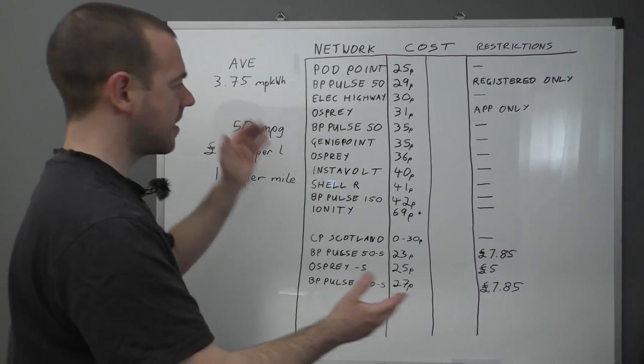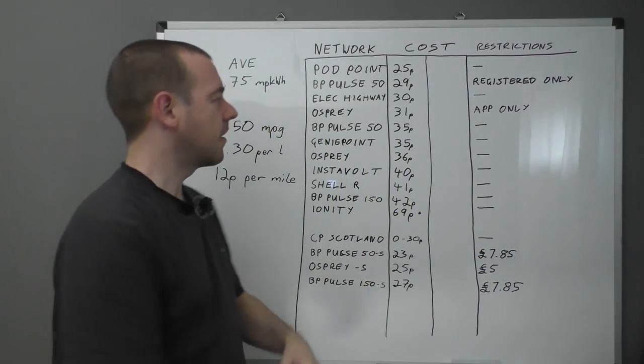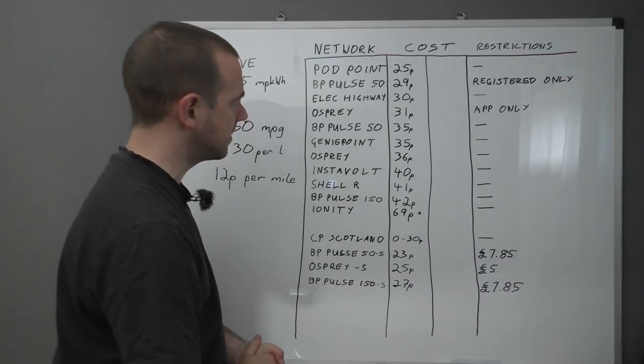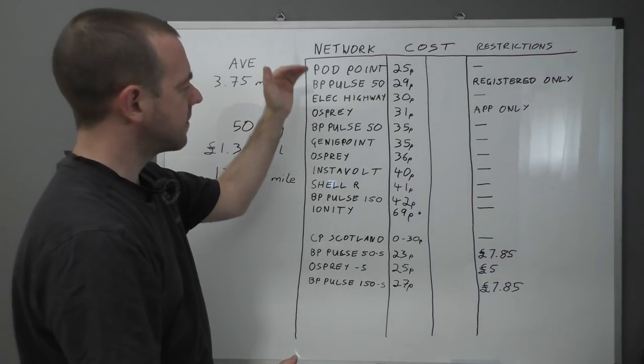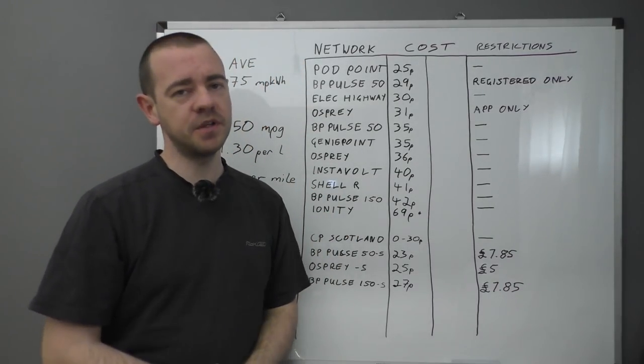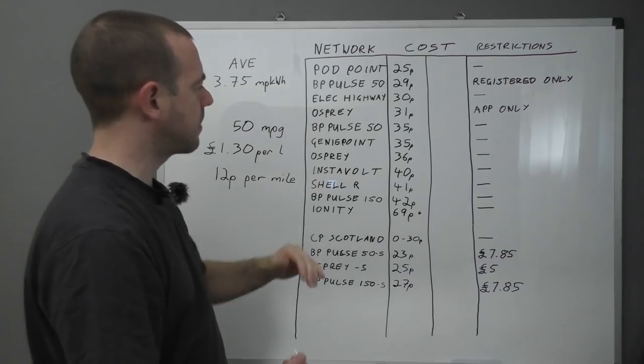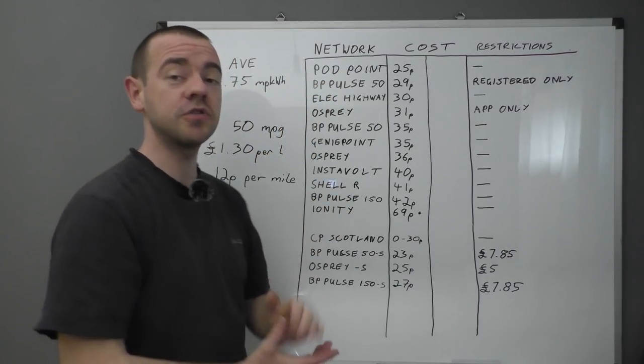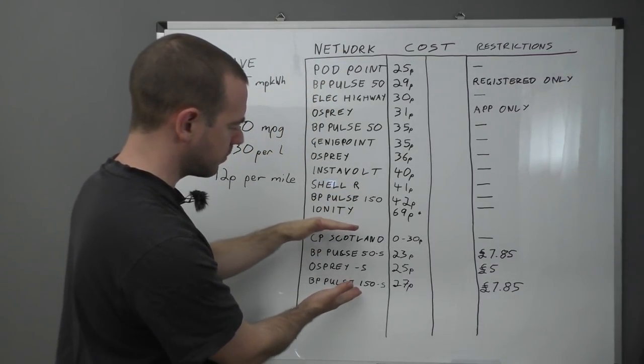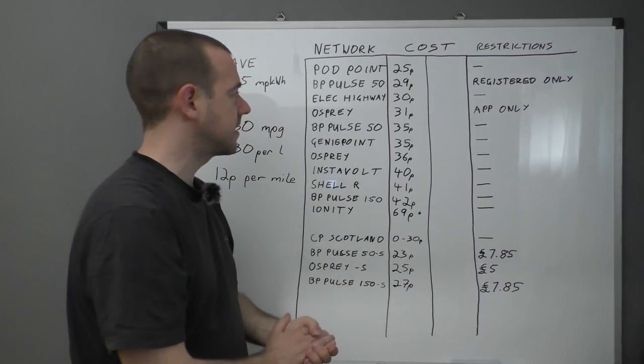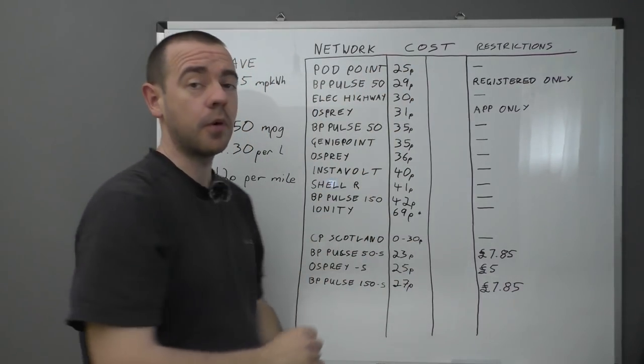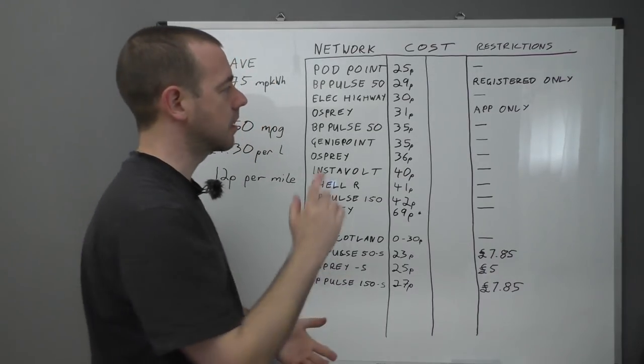Here we are, it's back. Now, I've obviously pre-populated all the data, apart from this, which will be the pence per mile. This is, effectively, all of the main rapid charging networks, from cheapest to most expensive, with a subsection which I'll explain down here for these. According to this, Pod Point is the cheapest rapid charging network at the moment, with 25 pence per kilowatt hour.